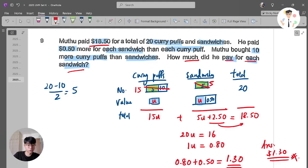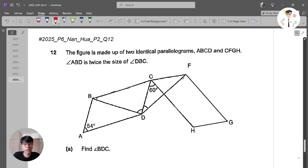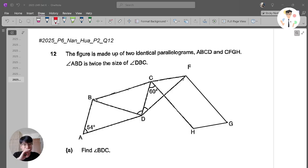Let's move on to our next part of the question. And I think that will mark the end of this paper. Our next and last question will be from Nanhua paper 2 question 12. Let's look at this question together. The figure is made out of two identical parallelograms, ABCD and CFGH.